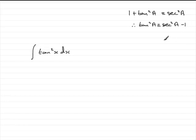subtract 1 from both sides. I'm using this identity because I know the integral of sec squared a. So let's just put this in here.